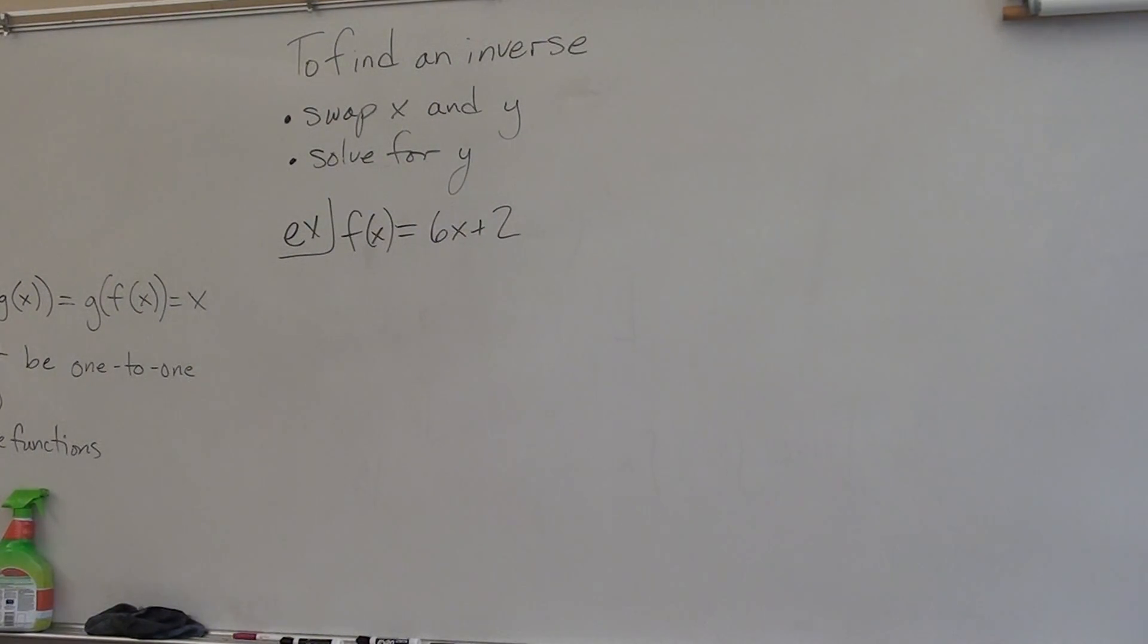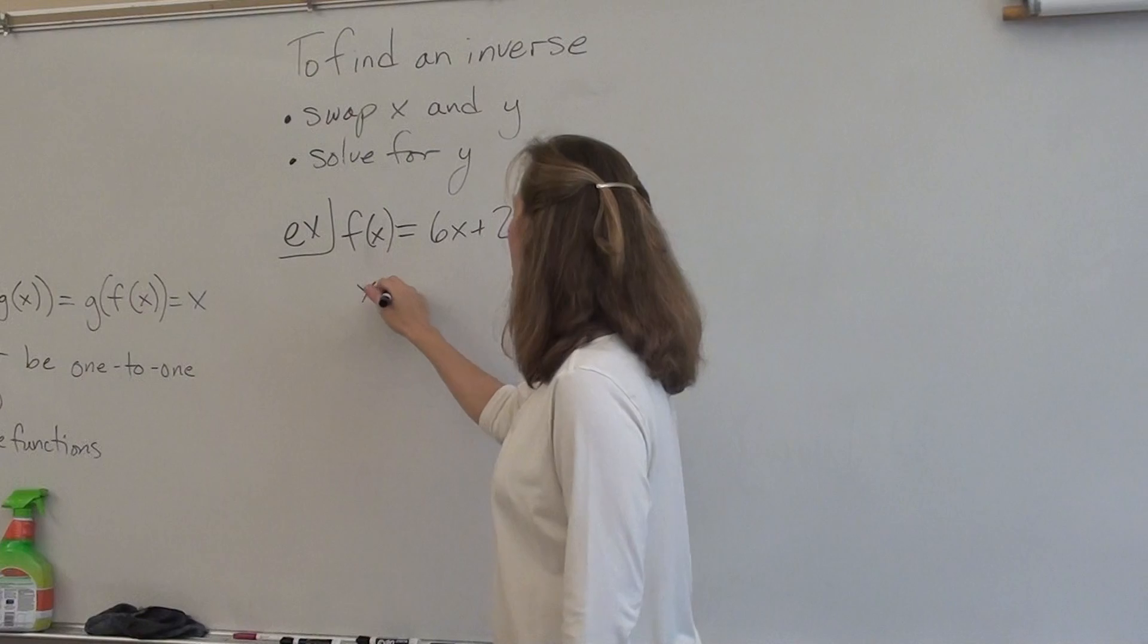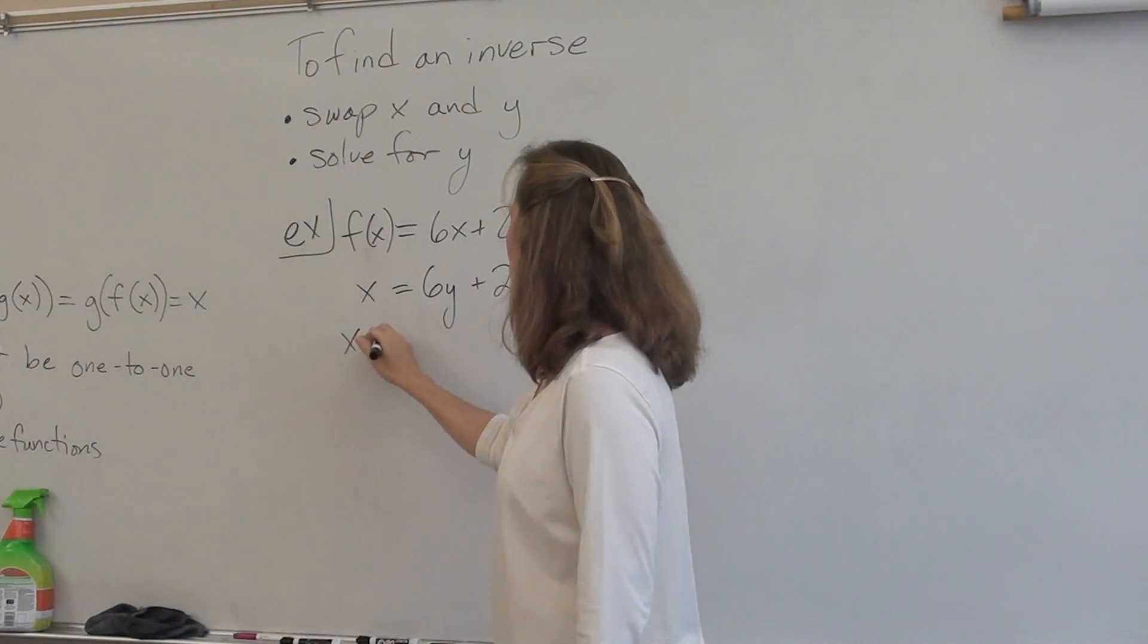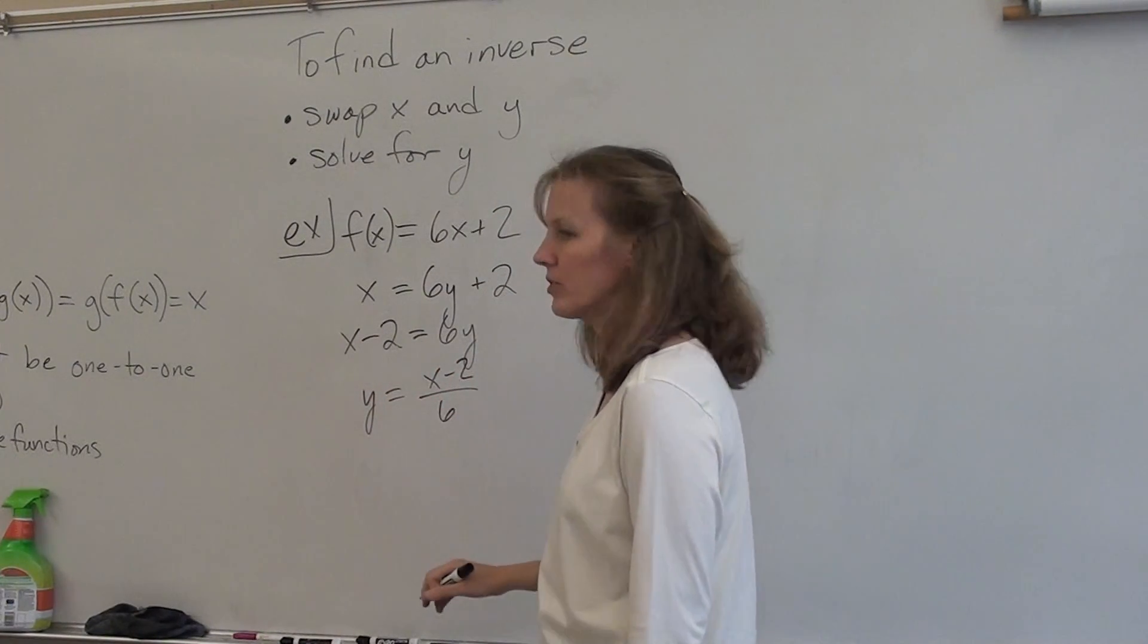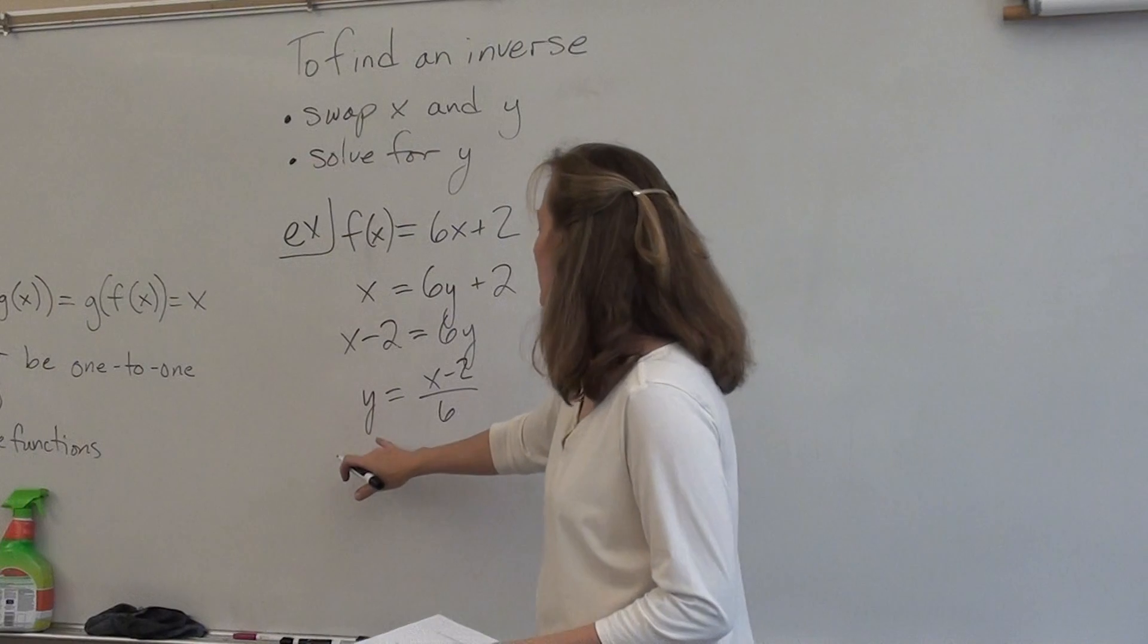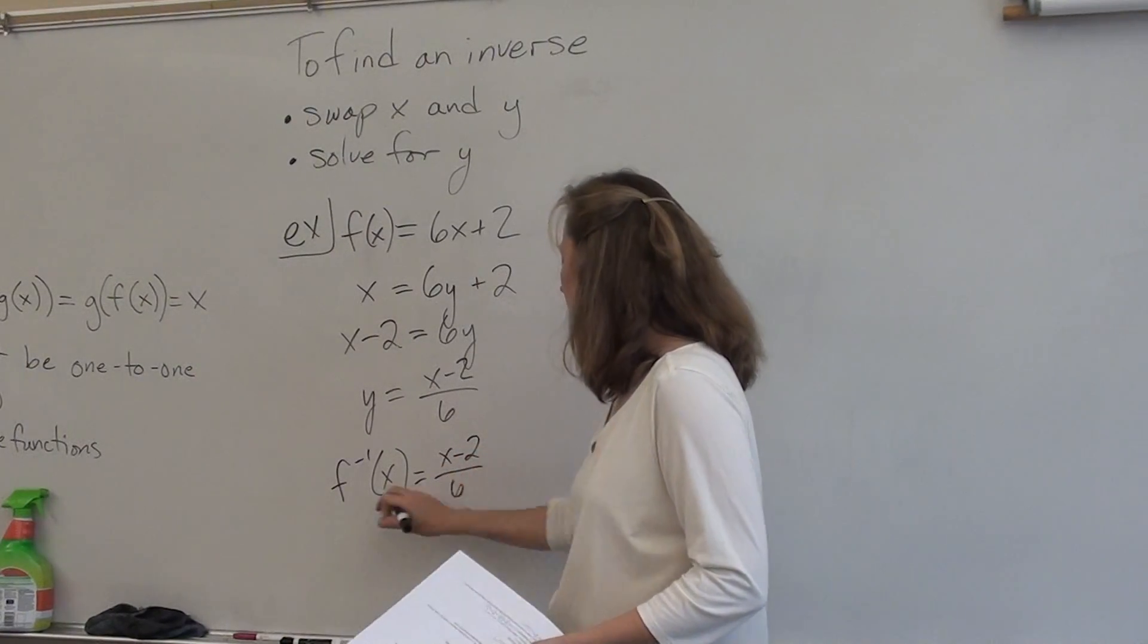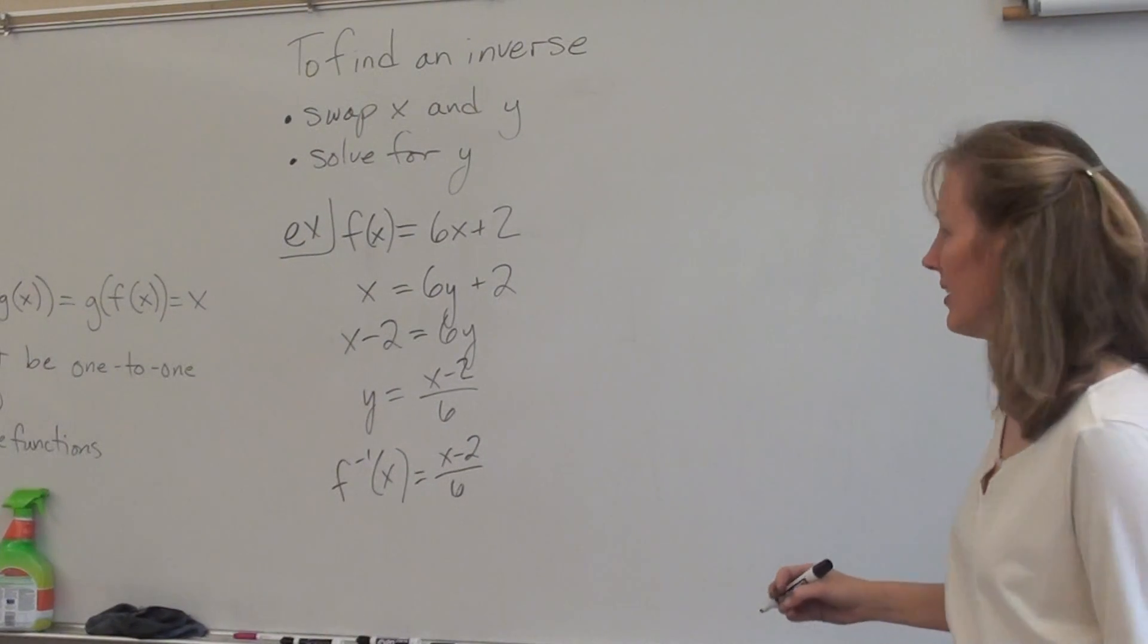For example, find the inverse of f of x equals 6x plus 2. First thing you have to do is swap x and y. But there is no y. f of x is y. So we have x equals 6y plus 2. Subtract the 2 and divide by 6 and y is x minus 2 over 6. If you want to write it in function notation, you would write f inverse of x. That little negative 1 exponent is what we use for inverse functions, like sine negative 1. Yes, same thing as arc sine.